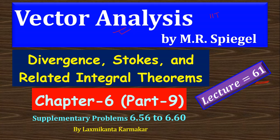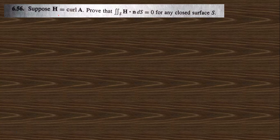In this video, we want to solve the supplementary problems 6.56 to 6.60 of chapter 6, which consists of Divergence, Stokes and Related Integral Theorems, mainly Gauss Theorem. Go to question 6.56, which says that H vector is nothing but curl of A, and prove that this is zero for any closed surface.